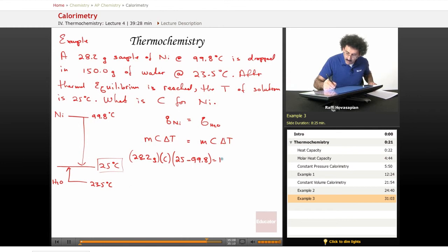25 minus 99.8. That's equal to the mass of water, which was 150. And the specific heat of water is 4.18. And the change in temperature is 25 minus 23.5. That's the delta T for the water. It goes from 23.5 to 25. And this one goes from the final minus initial 25 from the 99.8. That's why we've set it up this way.